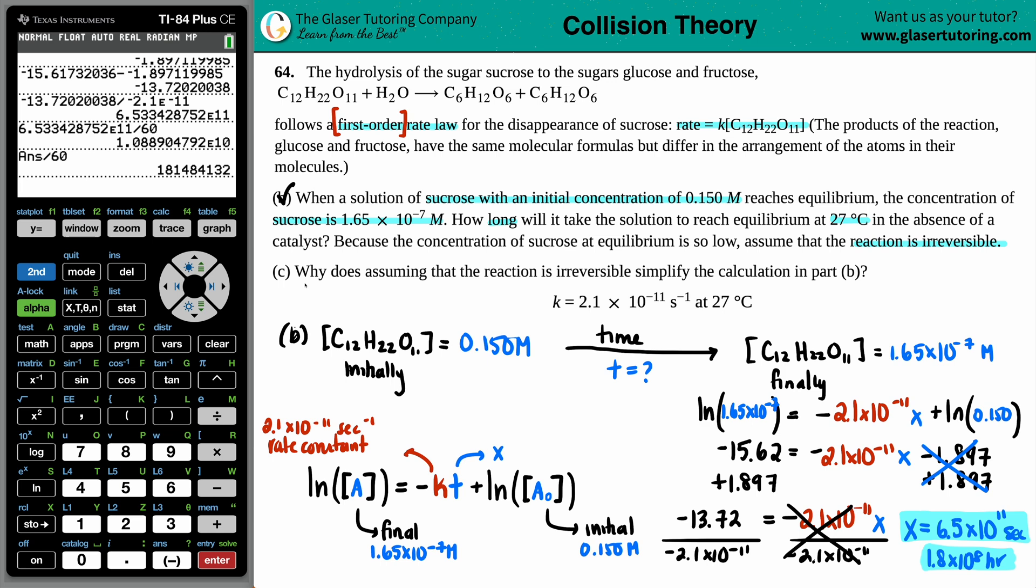Last one, letter C. It says, why does assuming that the reaction is irreversible simplify the calculation in part B? So why did we have to say that this was irreversible to solve for that time value?